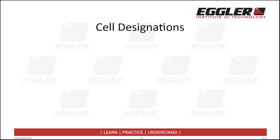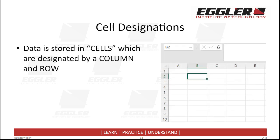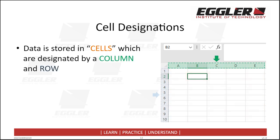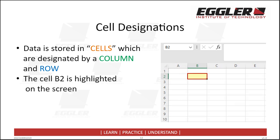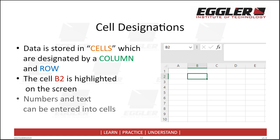The first thing we need to understand is how data is stored within an Excel spreadsheet. Each spreadsheet contains a range of cells. Each cell is designated by a particular column letter and row number. As we can see on the screen, the cell that is currently highlighted corresponds to column B and row 2 — therefore we refer to this specific cell as B2. Once we have selected a cell by clicking on it, we are able to enter data into it by typing on our keyboard. We will typically be entering numbers and text into cells as part of the preparation process for further data analysis.